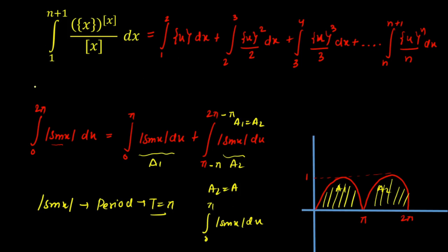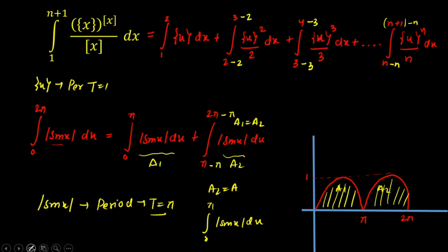Similarly, the fractional part {x} is periodic with period 1. So in each sub-integral I can subtract an integer multiple of 1 from both limits. For the integral from 1 to 2, subtracting 1 from both limits gives 0 to 1. For the integral from 2 to 3, subtracting 2 gives 0 to 1. For 3 to 4, subtracting 3 gives 0 to 1. In the end, subtracting n from the last integral also gives limits 0 to 1. So all the integrals now run from 0 to 1.